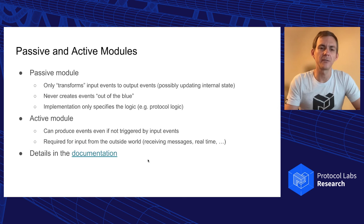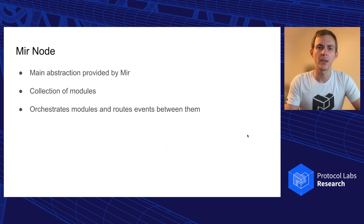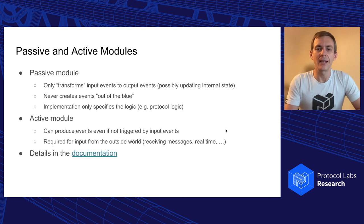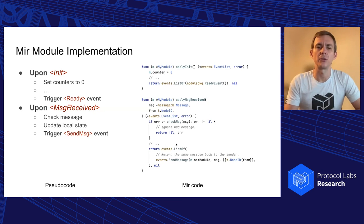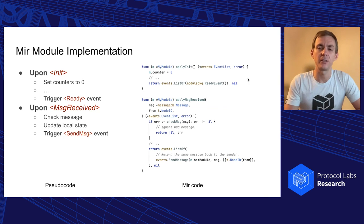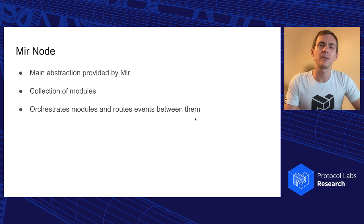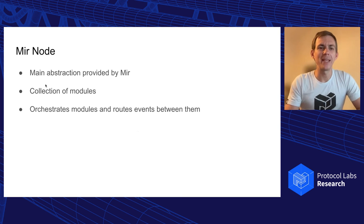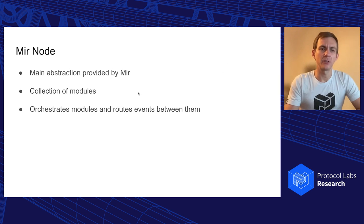You can have a look at the details in the documentation, which is also linked here. So now we have the modules and we know how to describe an algorithm. As you see, it's very close to the protocol as described in the pseudocode. There is some more boilerplate code when instantiating events and defining modules and their state, but the vast majority of it is actually generated by the tools that come with the MIR framework. The main abstraction provided by the MIR library is the MIR node. A node represents a node in the distributed system — it's basically a collection of modules that orchestrates those modules and routes events between them.